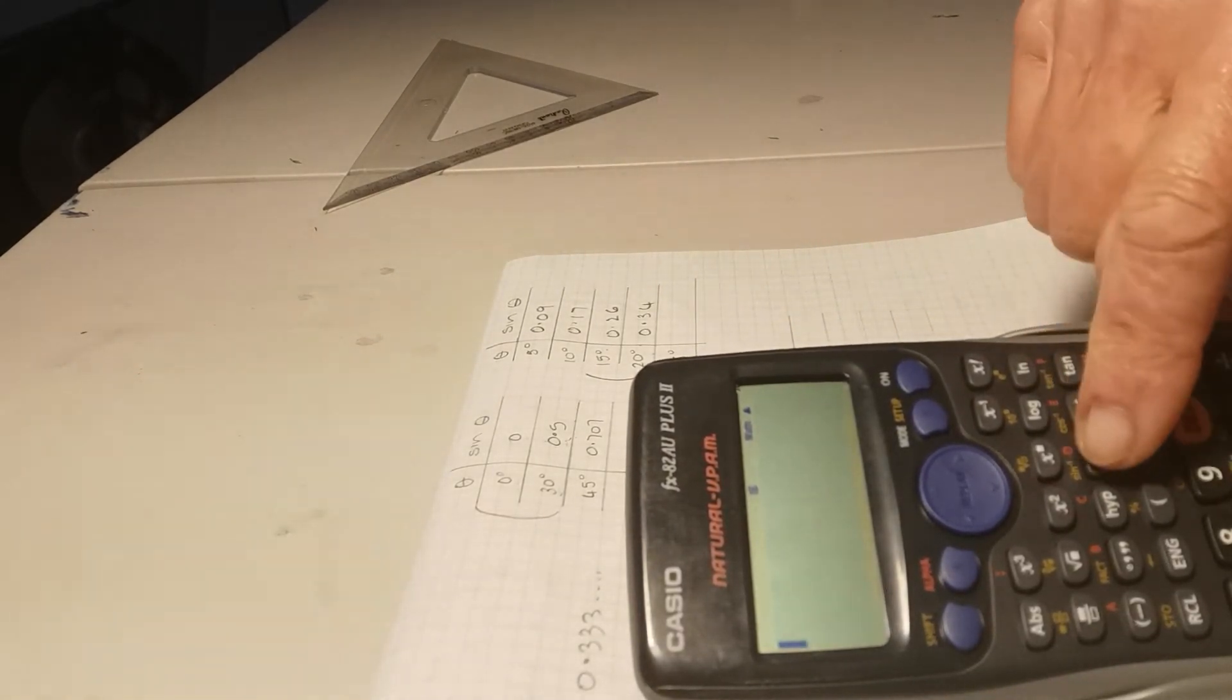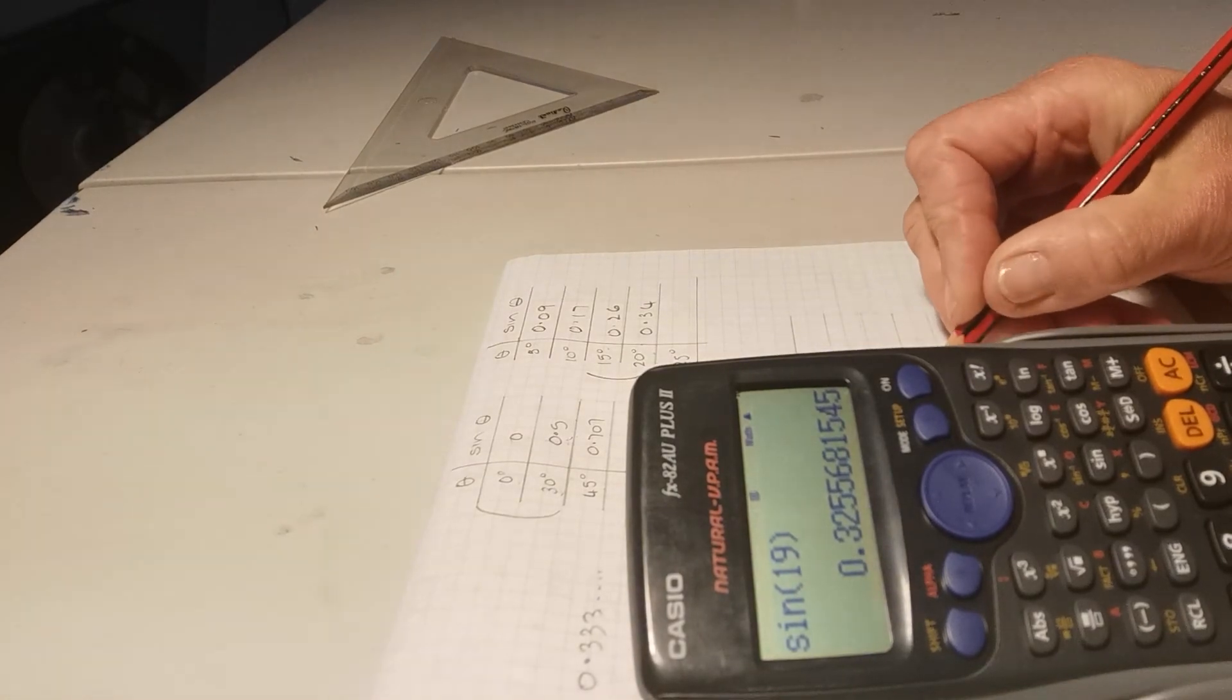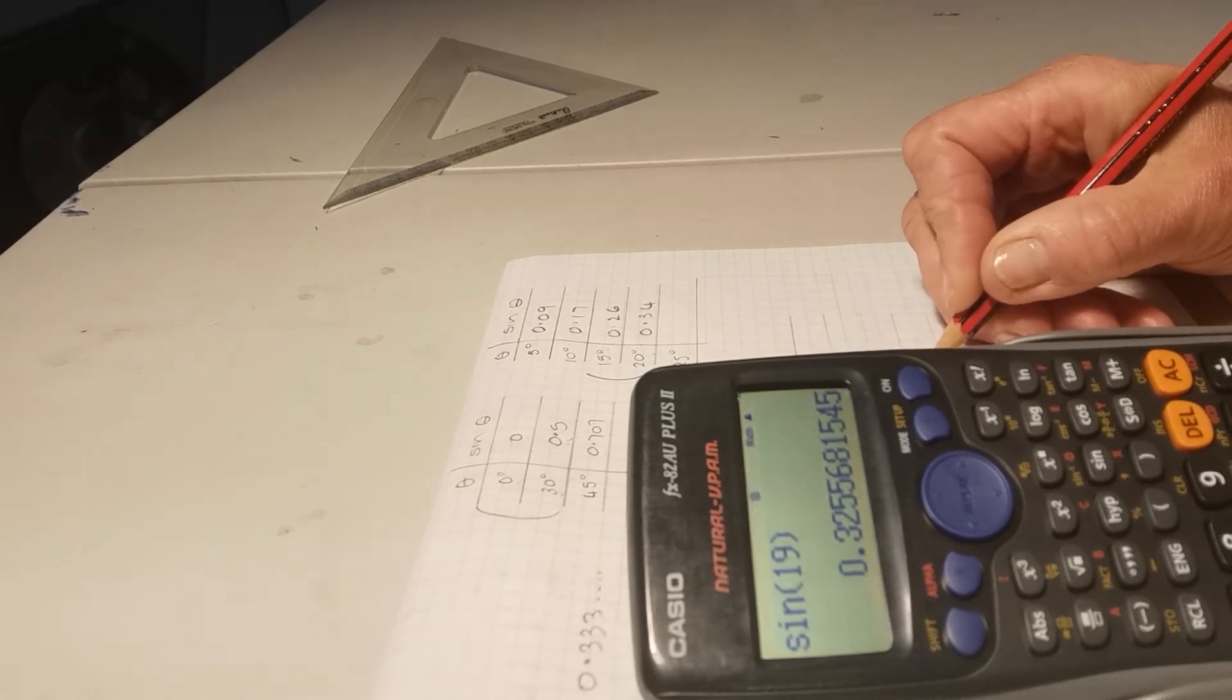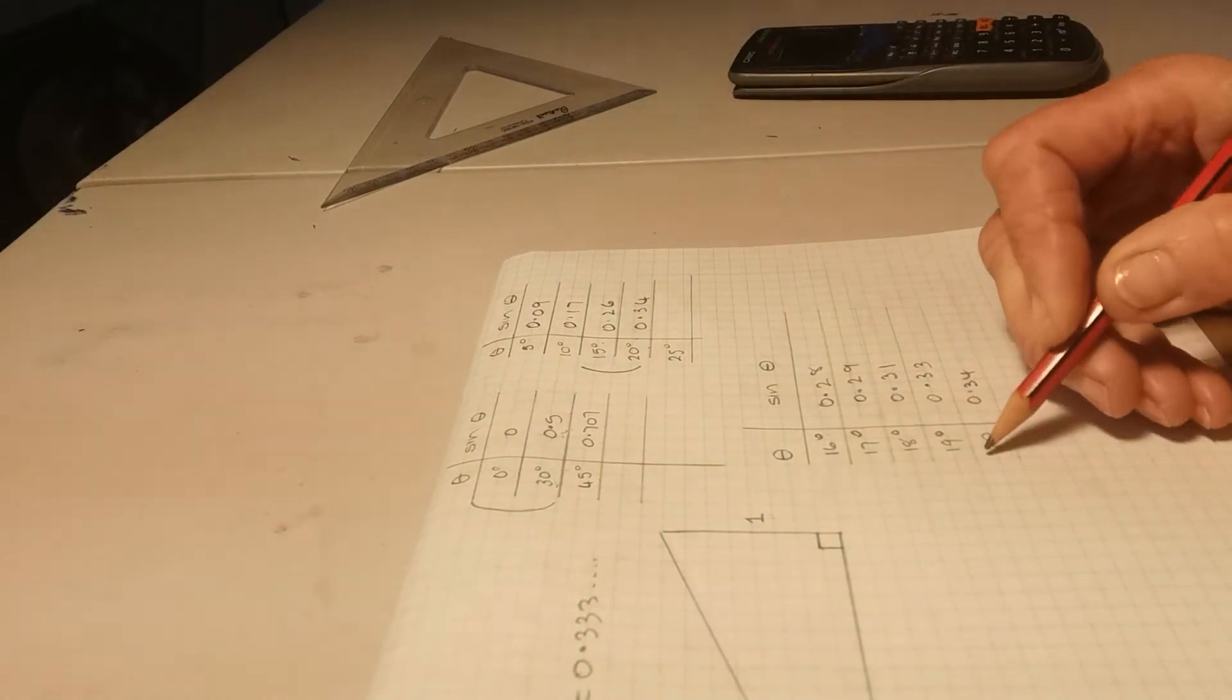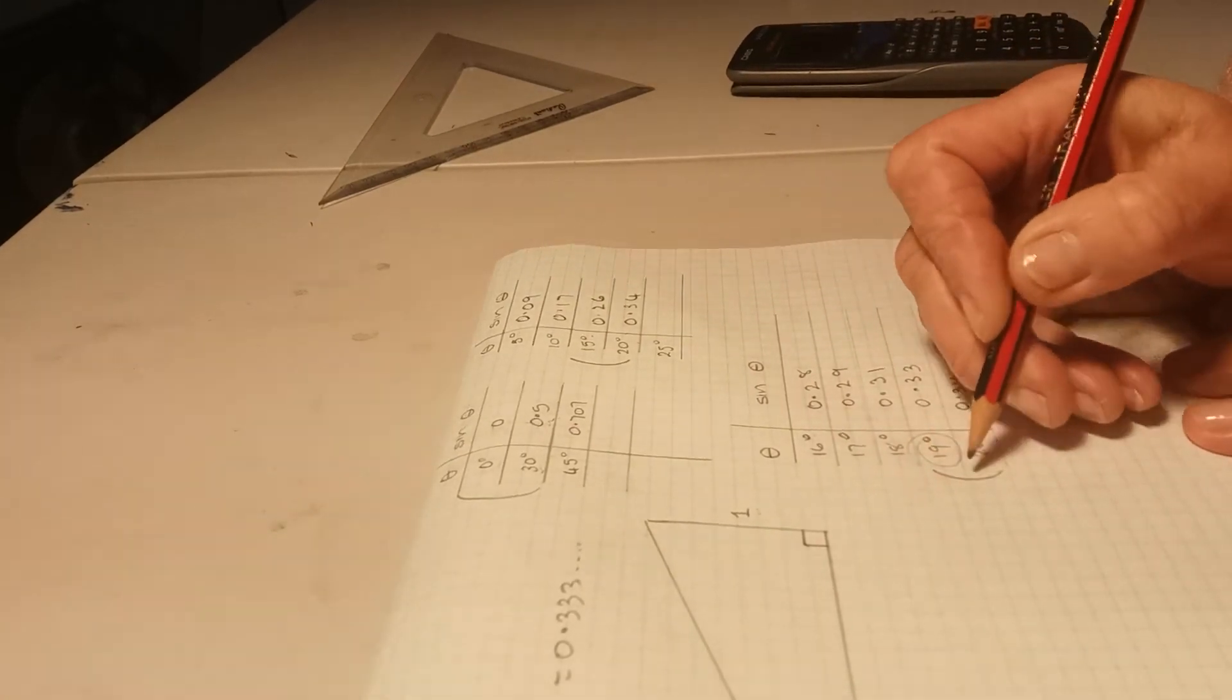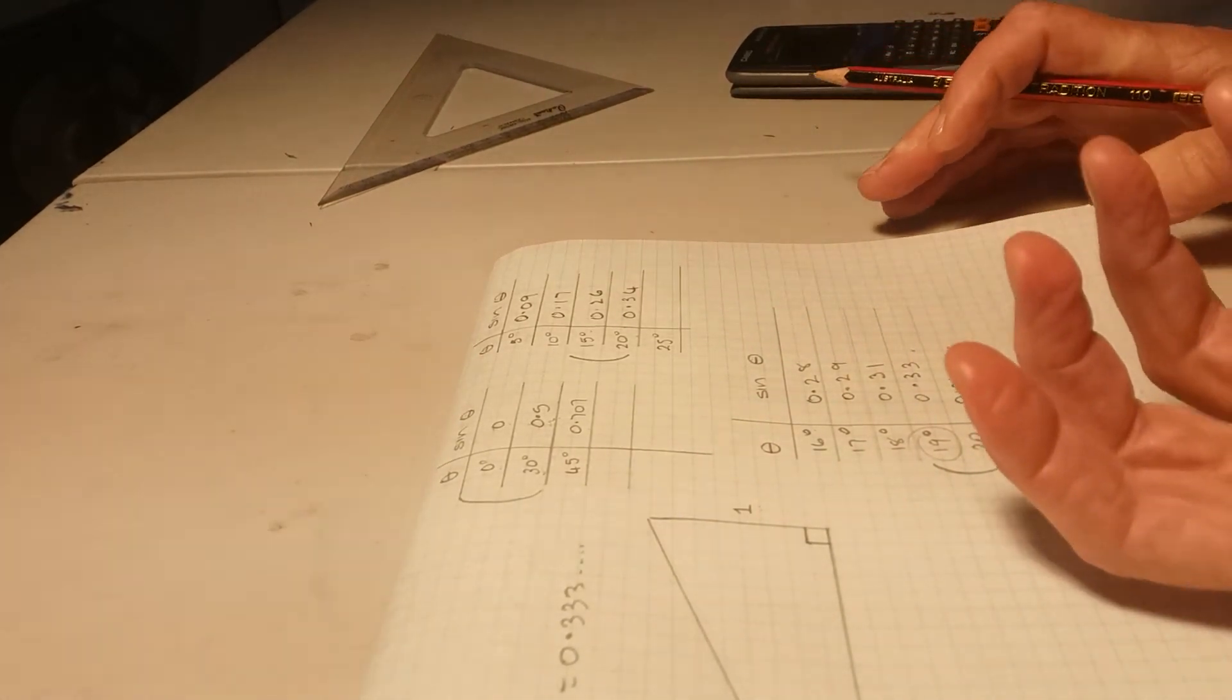And sine of 19 degrees, clear, so sine of 19 degrees is 0.3255. So it's getting very close. If we rounded that, it's very close to approximately 19 degrees, but it would probably be somewhere between 19 and 20 degrees, because that really was just under, and that's just over. So how do we find that?